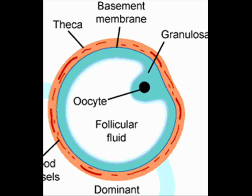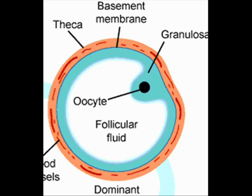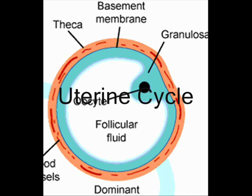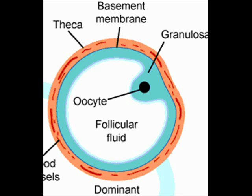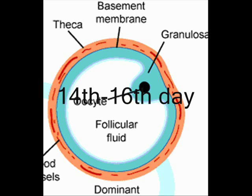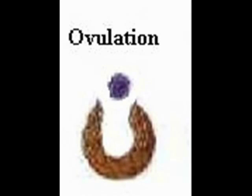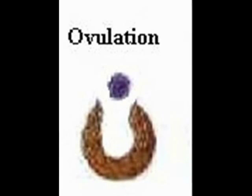The estrogen released by the follicles acts on the endometrium of the uterus and stimulates it to proliferate, indicating the start of the uterine cycle. The dominant follicle usually ruptures when it is about 18 to 20 millimeters in size and releases an ovum at about the 14th to 16th day of the menstrual cycle. This process is called ovulation.